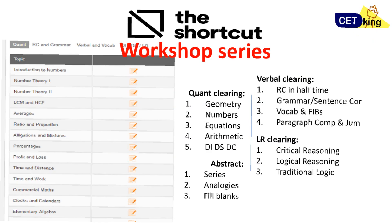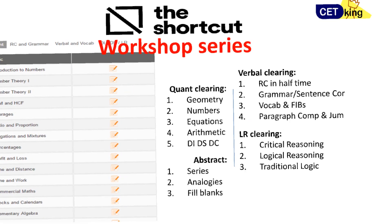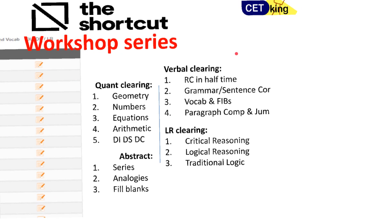For all Ctkin students, please log in to your ID and solve all the verbal workshops first. Check all the RCs, Paracompletion, and Parajumble workshops — just go through them. All the strategies are given there. Trust me, they will help you improve your scores.